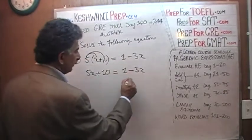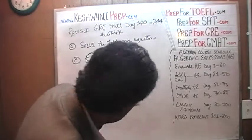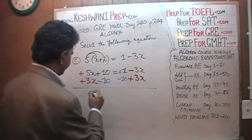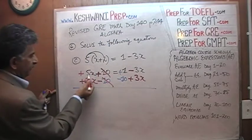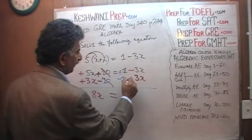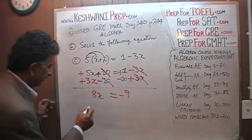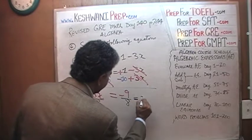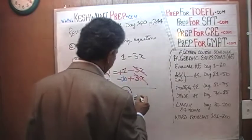How do I bring negative 3x to this side? By adding 3x to both sides. How do we get rid of the 10? By subtracting 10 from both sides. A positive 10 and a negative 10 cancel each other out. A positive 5x and a positive 3x gives us 8x equals. A negative 3x and a positive 3x cancel each other out, and positive 1 and negative 10 gives us negative 9. Divide both sides by 8 — x equals negative 9 over 8.